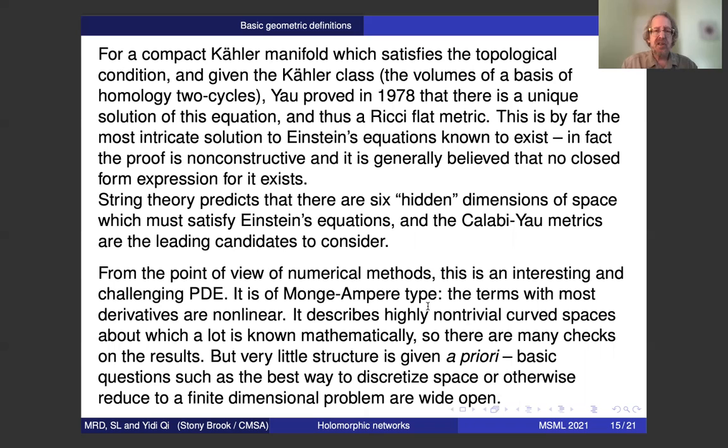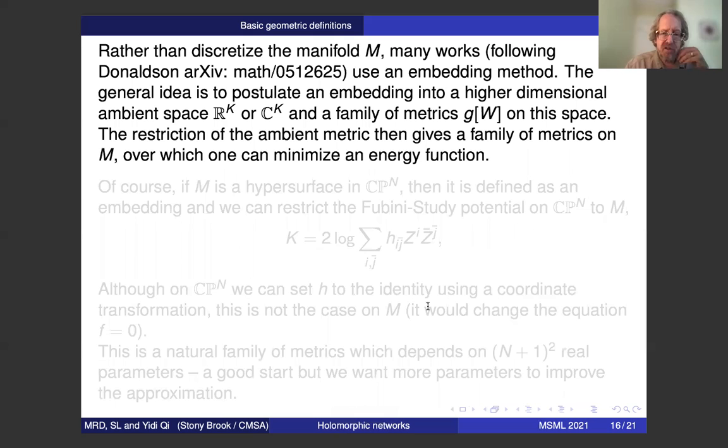The problem at hand, the compact Kähler manifold that admits topological grounds, a Ricci flat metric, Yau proved in 1978 that, in fact, given the appropriate finite data about the size of the manifold, there's a unique Ricci flat metric. This is the most intricate solution known to exist to Einstein's equations. So far as anybody knows, it does not admit any explicit closed form solution. So to work with it, we need numerical methods.